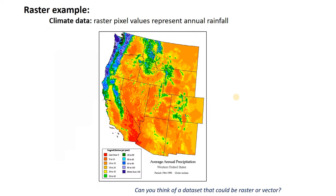Another example is climate data. We know that it rains everywhere at some point, so precipitation is a perfect continuous variable — we need it represented everywhere. If we color high precipitation blue and low precipitation yellow, we end up with a beautiful map of wet versus dry areas in the western United States.